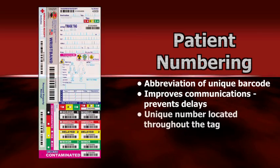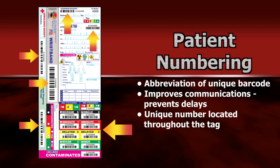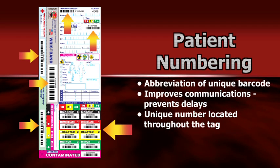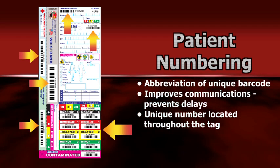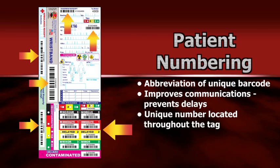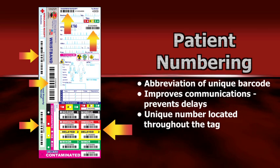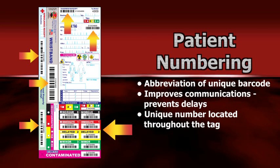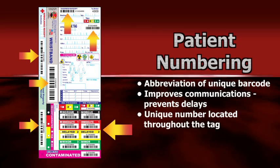The unique four-digit number can be found on all components of the triage tag for full reference through the treatment, transport, and hospital admissions process. There are several other components of the DMS tags designed to increase efficiencies at scene, which should be reviewed during training or multi-company drills.